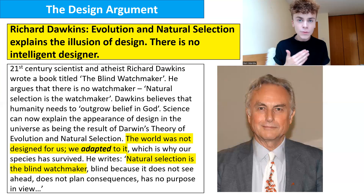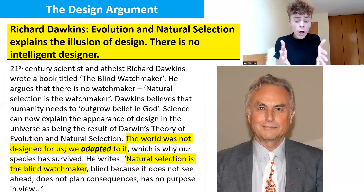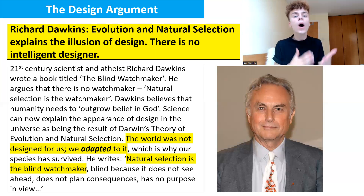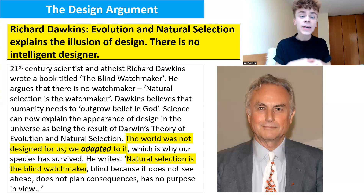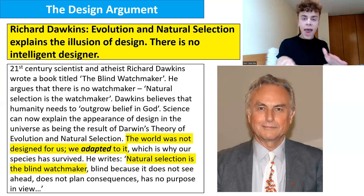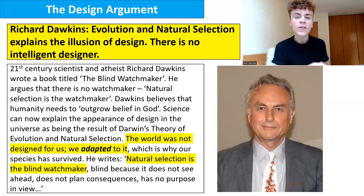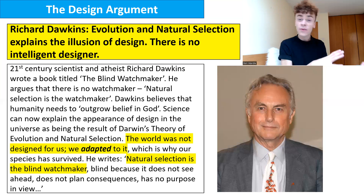For Richard Dawkins, modern scientific theories such as evolution disprove the design argument, because they show the world was not designed for us but we adapted to it over millions of years through random mutations. The key word is random — there is no design behind it, there is no purpose in view. If you want to critique the anthropic principle, Dawkins would say the boundary conditions were not fine-tuned for us; rather our species adapted and evolved to the conditions on this planet, facilitating our survival — hence survival of the fittest.